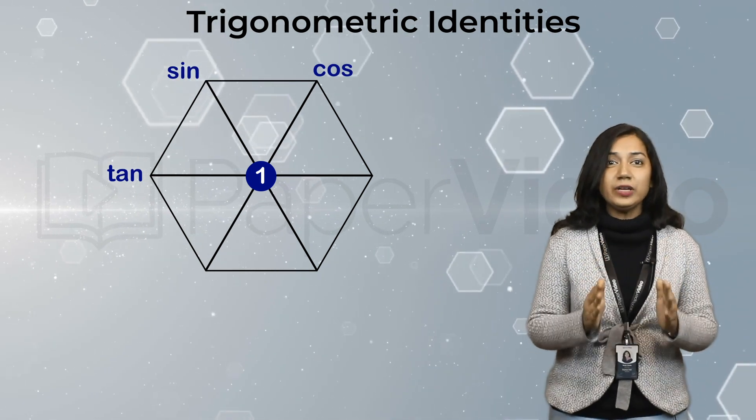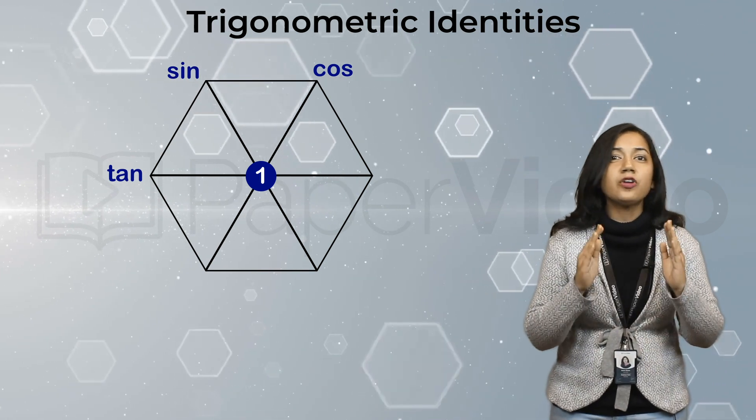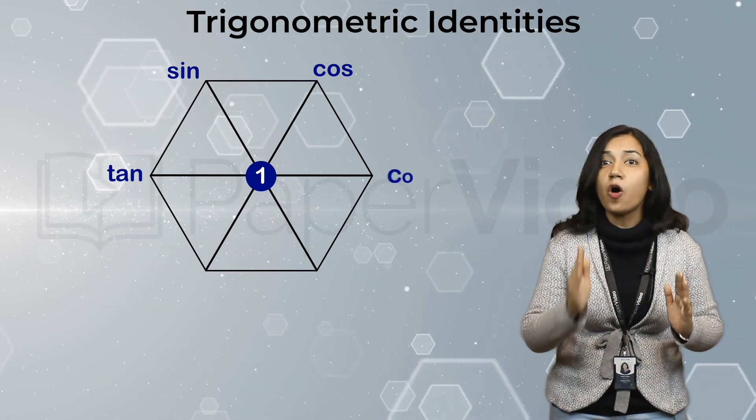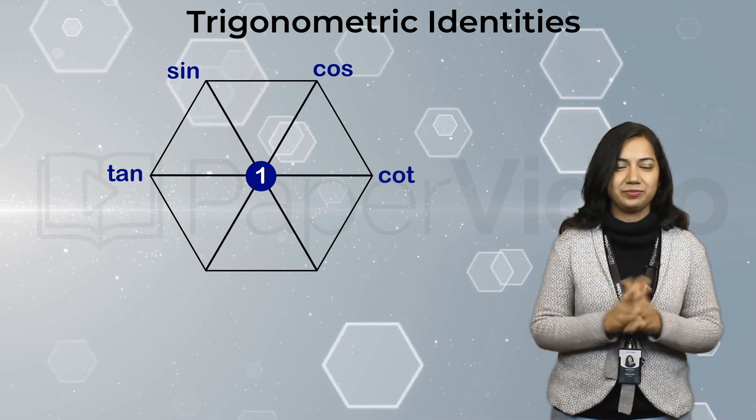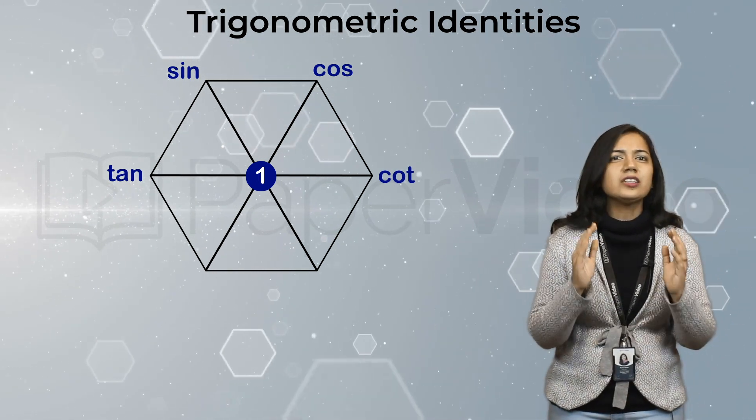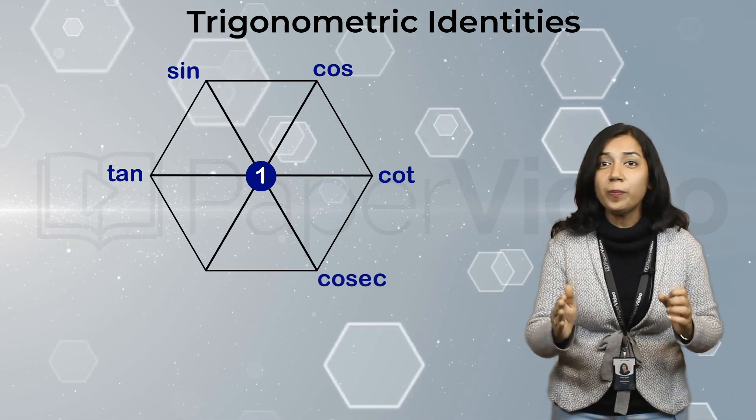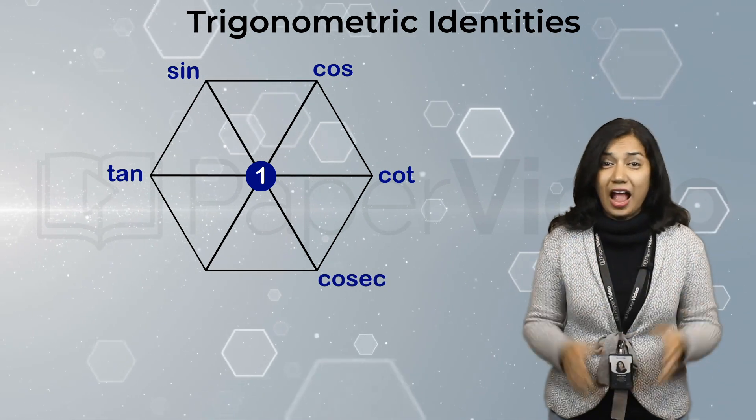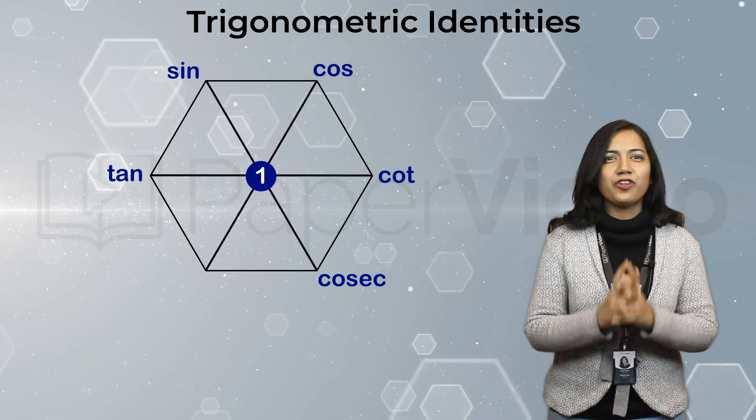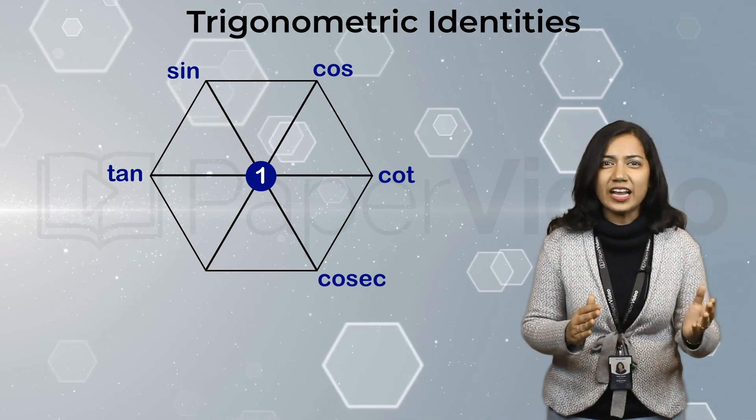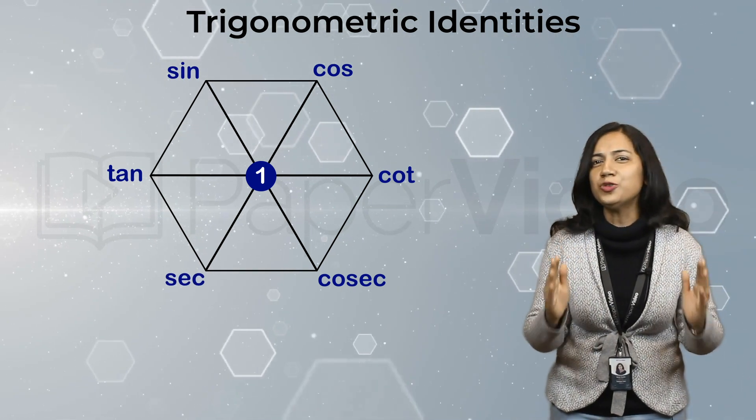Now, as we remember cot is opposite of tan, so we write cot at the opposite vertex to tan. Similarly, cosec is opposite of sine, so we write cosec at the opposite vertex to sin. And sec is opposite of cos, so we write sec at the opposite vertex to cos.